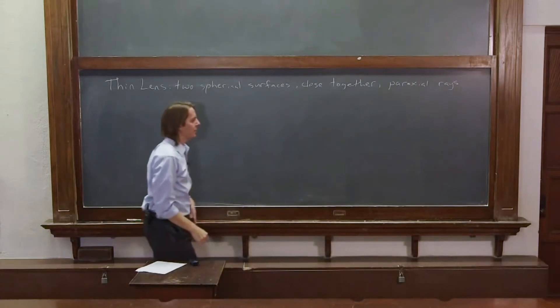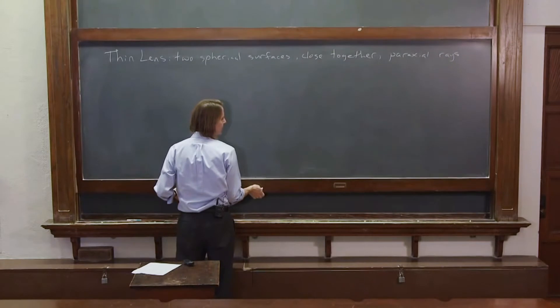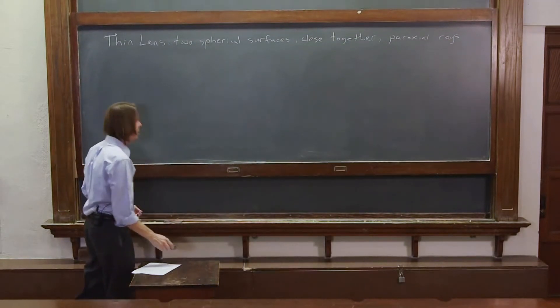So rays close to the optical axis that make small angles with the optical axis. Alright, let's get a drawing going of a thin lens.